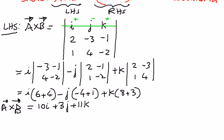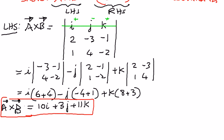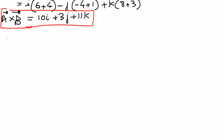So the cross product of vector a cross vector b is equal to this value. I'm going to put a block around this — this is what we've arrived at. This is the left-hand side of the equation. We want to also show the right-hand side, and use determinants to expand the right-hand side as well, and see whether the property is true or not.